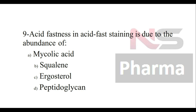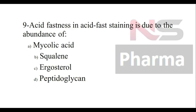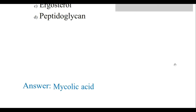Question number nine: Acid fastness in acid-fast staining is due to the abundance of — Option A: Mycolic acid, Option B: Squalene, Option C: Ergosterol, Option D: Peptidoglycan. The answer is mycolic acid.